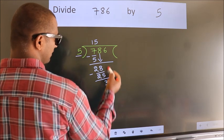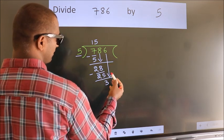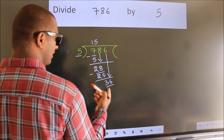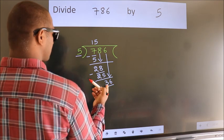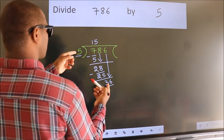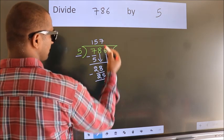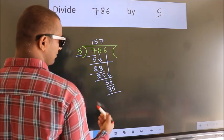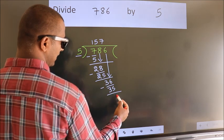After this, bring down the beside number. So 6 down, so 36. A number close to 36 in the 5 table is 5 times 7 equals 35. Now we should subtract. We get 1.